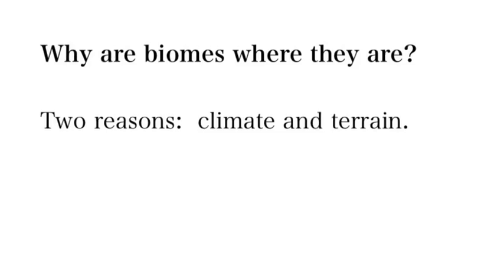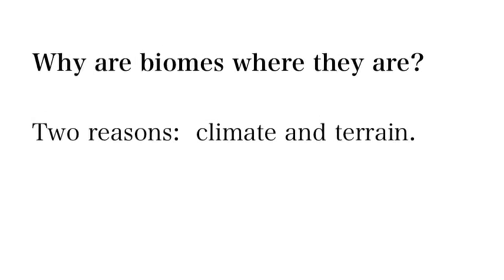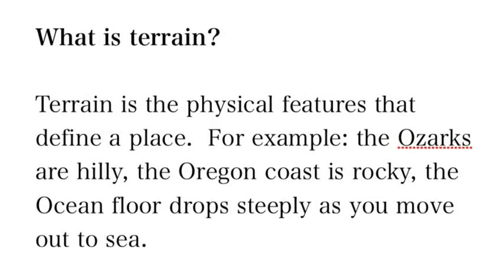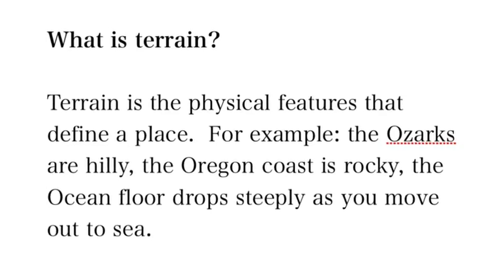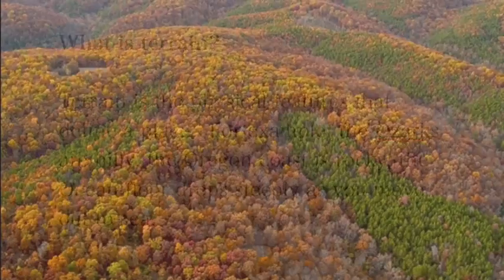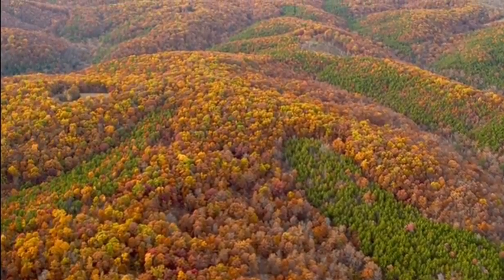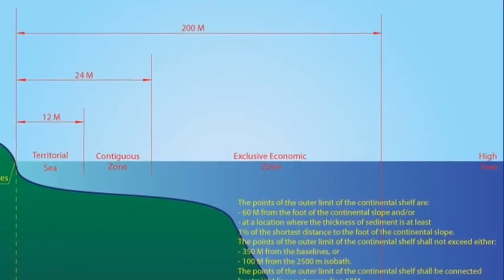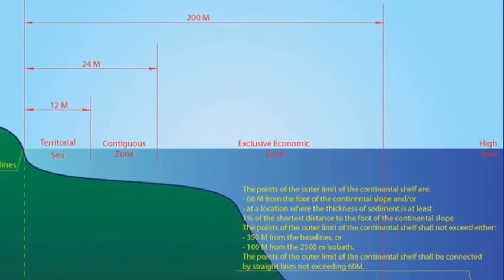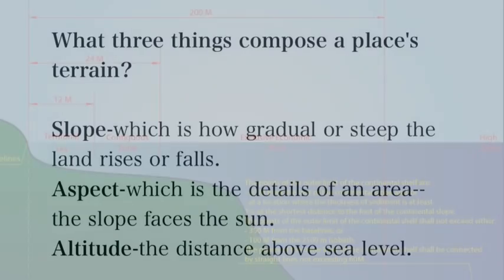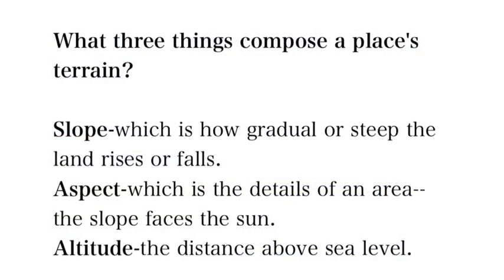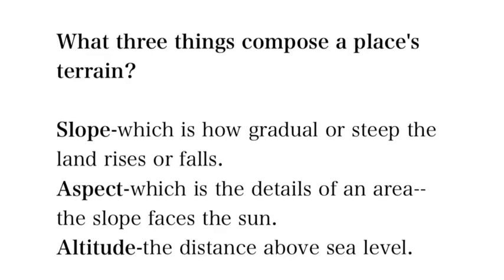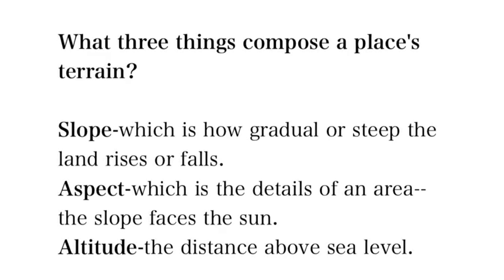So all these different biomes — what determines what they are? The climate and the terrain. Those are the two things. Terrain is the actual physical features or the geography of a place. For example, the Ozarks, besides being beautiful, is very hilly. The Oregon coast is really rocky, and the continental shelf of the ocean drops very steeply. So these things compose a place's terrain, and specifically it's slope, aspect, and altitude.